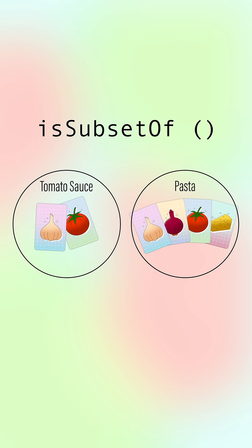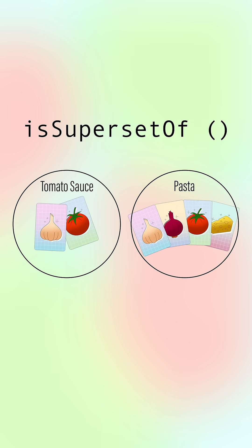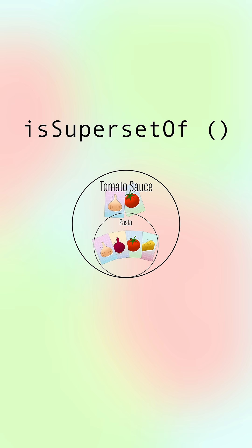There are a few validation methods too. In this example, tomato sauce is a subset of pasta, so the method returns true. The isSubsetOf method checks the opposite — in this case, tomato sauce is not a superset of pasta, so it returns false.